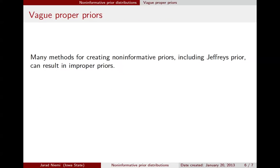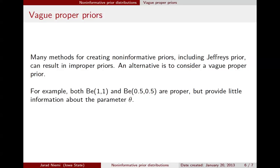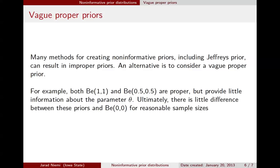Okay, and an alternative method for creating non-informative priors is to use proper priors and make them vague. Right, so for example, both the beta 1, 1 and beta 0.5, 0.5 are proper, but neither of these provide very much information about the parameter theta, and therefore in some sense they are non-informative. And ultimately, there is very little difference in the inference between using these priors and using the beta 0, 0 prior as long as you have a reasonable sample size. And with the proper priors, you're ensured that the posterior is proper.